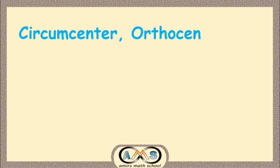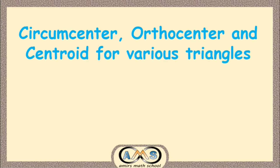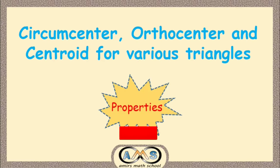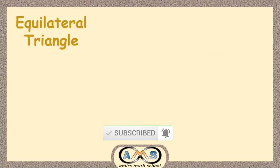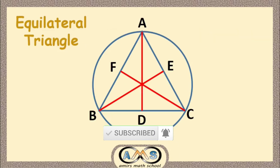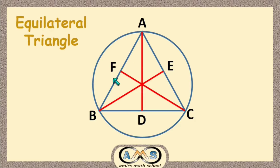Now let's see the circumcenter, orthocenter, and centroid for various types of triangles, and finally we will see the properties of these points. First, for the equilateral triangle. This ABC is the equilateral triangle, and DEF are the midpoints of the three sides of this triangle.